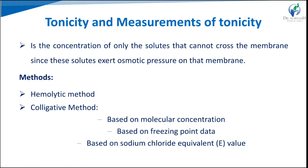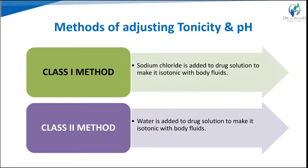Tonicity is the concentration of only those solutes that cannot cross the membrane, since these solutes exert osmotic pressure on the membrane. Tonicity may be measured by two methods: the hemolytic method and colligative methods. Colligative properties used include freezing point depression, sodium chloride equivalents, and molecular concentration. These are used when it is difficult to directly measure osmotic pressure.